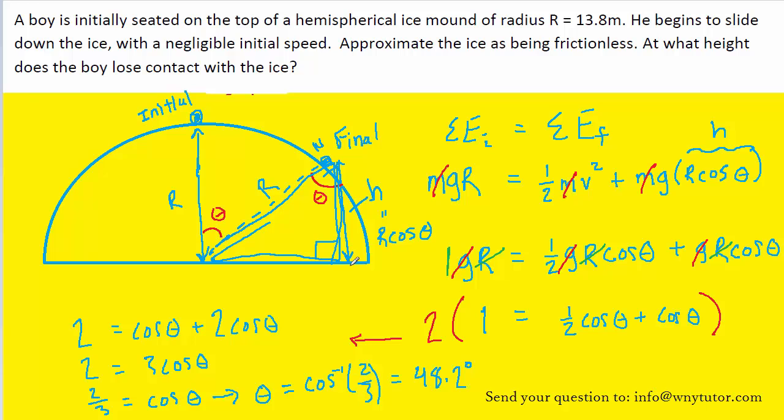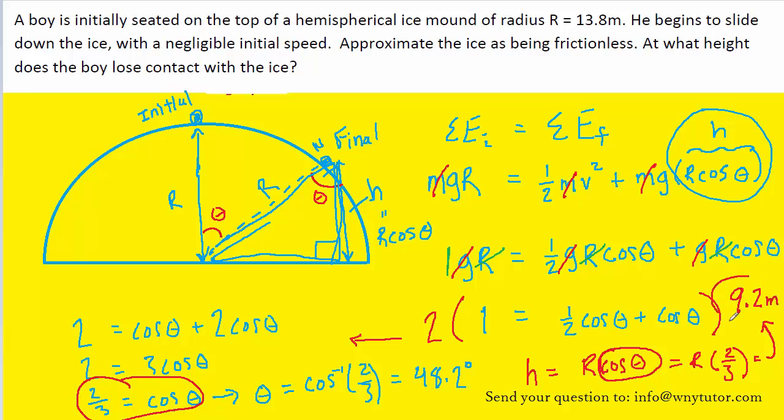Now, we were asked to find the height at which the boy falls off, and we recall from right over here that the height was r times the cosine of theta. So, let's finish this off by calculating the height as r cosine of theta. Indeed, we didn't really even have to find the angle because the cosine of theta, that term right there, we knew was two-thirds. So, in fact, we're simply going to take the radius and multiply by two-thirds. And I've painted myself into a corner here, but that gives us exactly 9.2 meters, the height at which the boy leaves the hemispherical mound of ice.